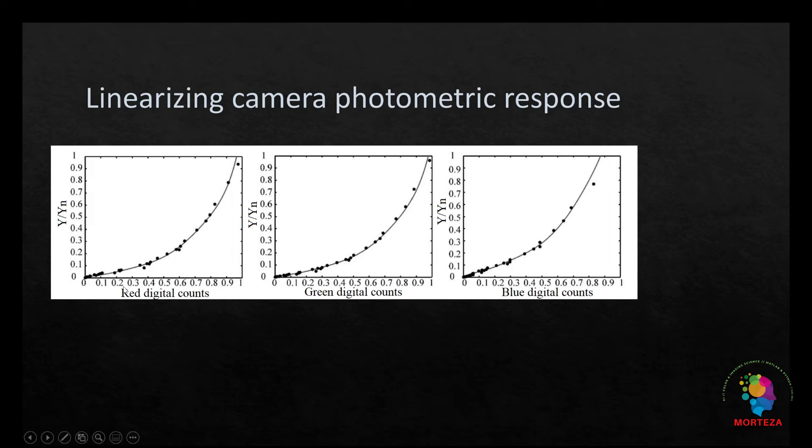Normalized digital counts, as shown here, which is from 0 to 1, refer to digital count divided by 255 for 8 bits per channel system. As you can see, the photometric response of cameras are usually nonlinear, but we have to linearize that. The linearized camera response for red, green, and blue channels are shown here. The transfer functions are usually a polynomial function of some kind.